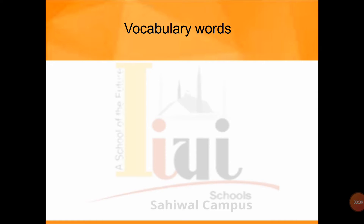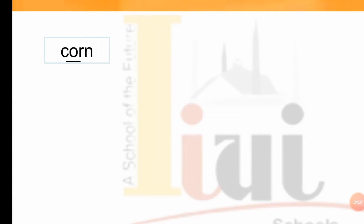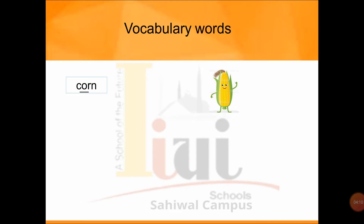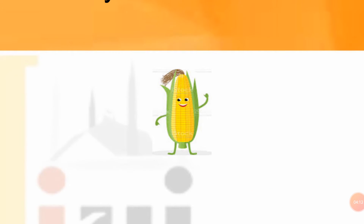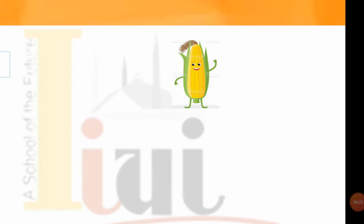Let's write these words and learn. Open your English notebook. The first word is C-O-R-N. C sounds K, O-R sounds OR, and N sounds N — K-OR-N — and it becomes CORN. Do you know what is corn? This is corn. Have you ever eaten boiled corn or cooked corn? Baked corn we will definitely eat. Do you like it?